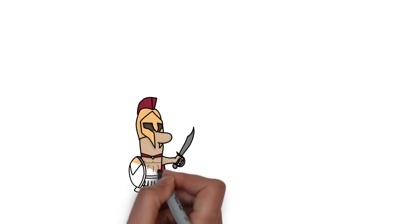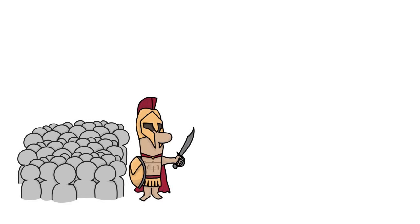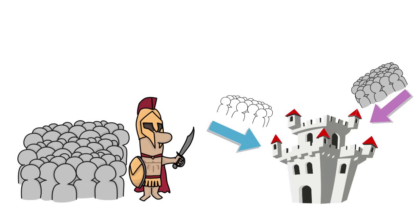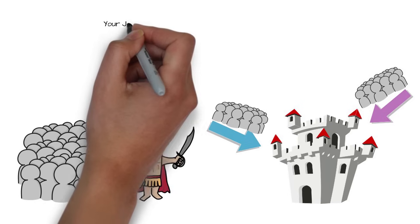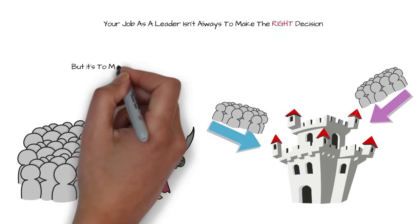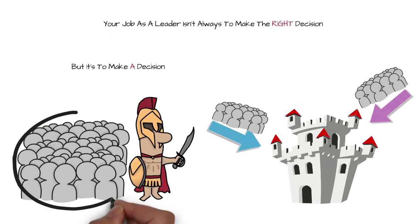Imagine that you are the commander of an army and you have to make the decision whether to enter the enemy territory from the north or from the west. There's no information as to which one makes more sense, but you will still have to choose. Because without you, their leader, half of your army might decide to invade from the north and half from the west and some might even call it quits and retreat. Therefore, your job as a leader isn't to always make the right decision, but it's to make a decision in order to keep the team together.